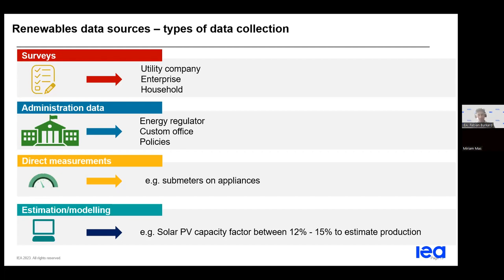Here's an example for solar PV: if you need electricity generation data but have only information on capacity installed, you can calculate generation by assuming a capacity factor, which for solar PV is around 12% to 15%.